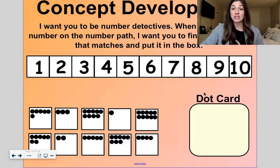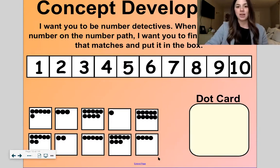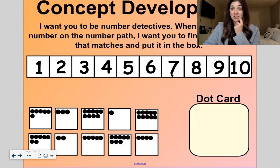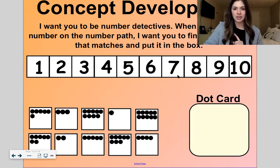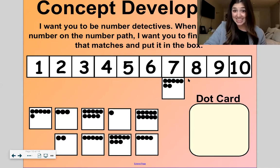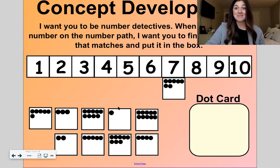Okay. Now I want you guys to be number detectives. When I point to a number on the number path, I want you to help me find the dot card that matches it, and we'll put it in the box. We'll do this just two times, okay? All right, so let's see. Here is the number seven. Which number shows me five on top and two on the bottom? Five on top and two on the bottom would be seven. Is it this one? No, that's one. Is it this one? No, that's five. Is it this one? Five on top, two on the bottom, five, six, seven. That is my seven. That's a match. Good.